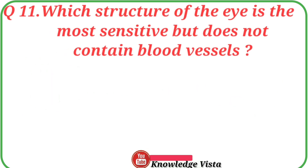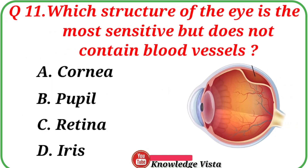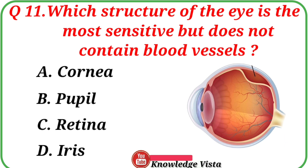Question No. 11: Which structure of the eye is the most sensitive but does not contain blood vessels? Your options are: A. Cornea, B. Pupil, C. Retina, D. Iris. Correct answer is Option A, Cornea.